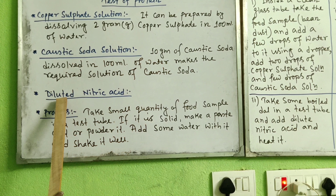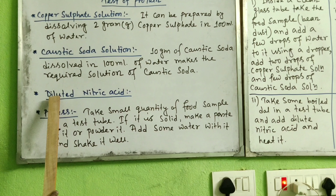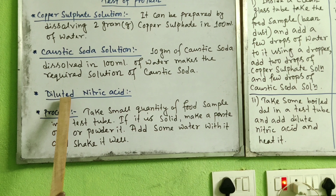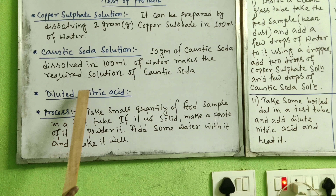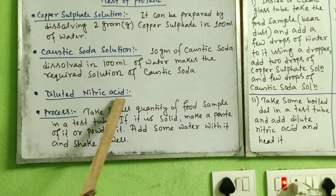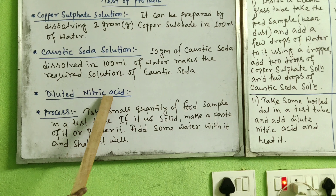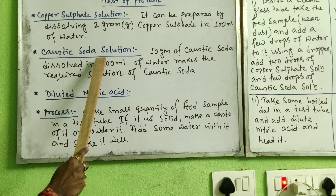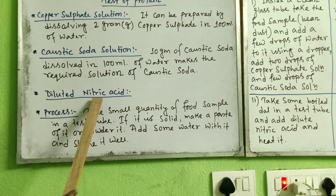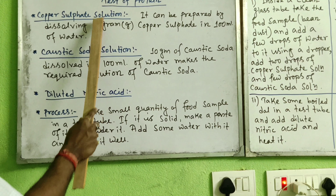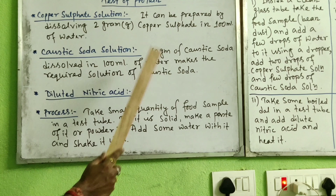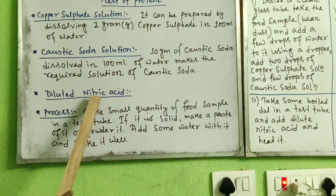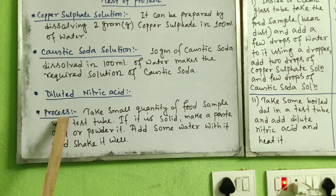There is another thing you can also use: diluted nitric acid. You can also test for protein using diluted nitric acid. These two reagents — copper sulfate and caustic soda — are required together for the first experiment, and the diluted nitric acid is for another experiment. We will see all of these today.